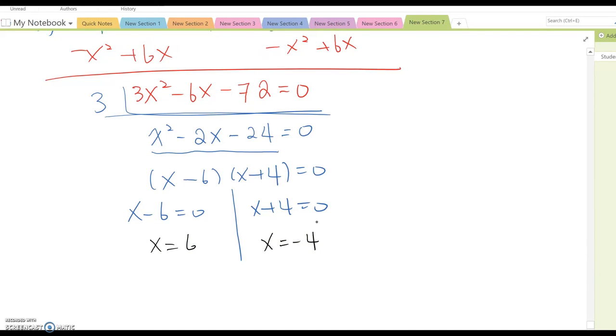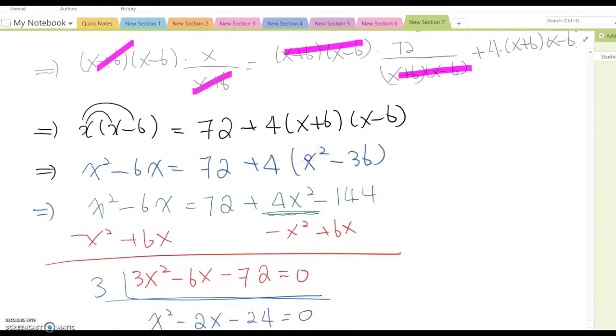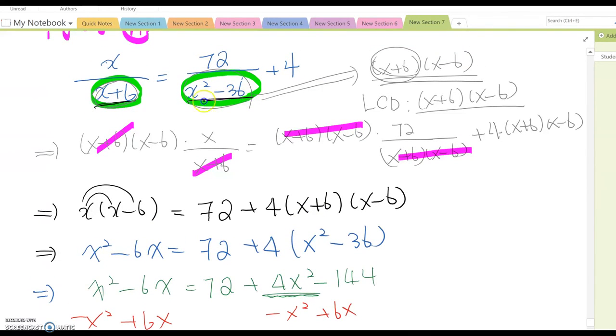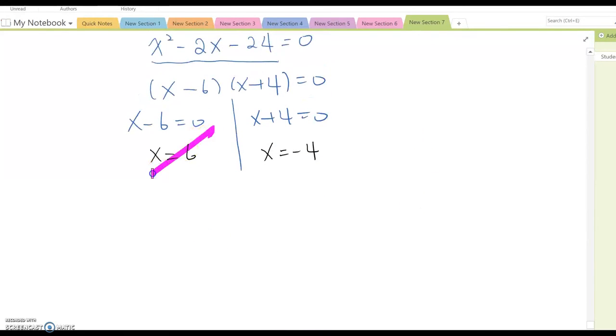Before confirming those answers, we must go back to the original equation and confirm whether either one or both makes any fraction undefined. We got x equals 6, but look at this. We confirmed that this factor becomes x plus 6 and x minus 6. If you plug 6 into here, this is going to be zero, so this fraction becomes undefined. So unfortunately, 6 cannot be the answer. Negative 4 is the only answer. What if you don't check and confirm your answer? Then unfortunately, your answer is not correct.